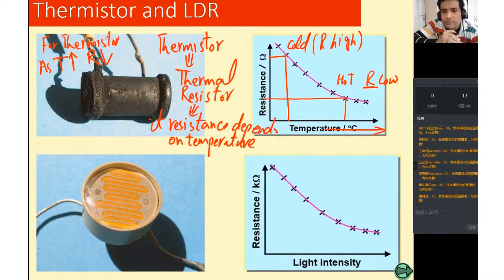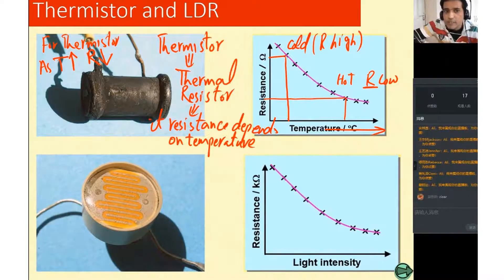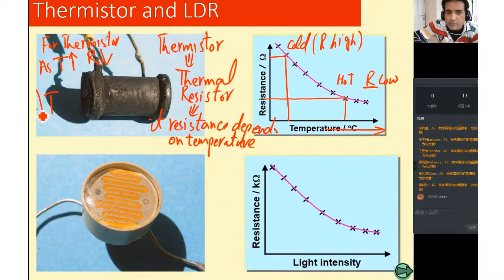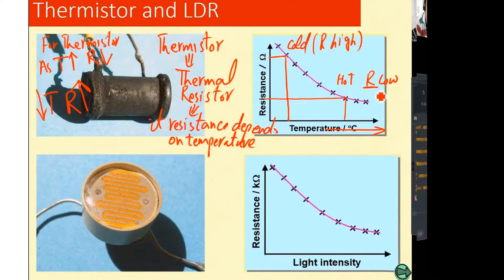Have a look at this one, thermistor. This is opposite to filament lamp. It is made of different material. So as its temperature increases, its resistance decreases. And if temperature decreases, on the other hand, its resistance will increase. So you can see from here: cold, high resistance; hot, low resistance.